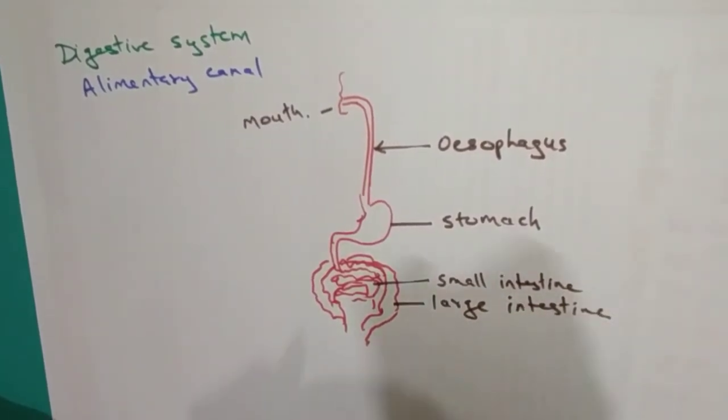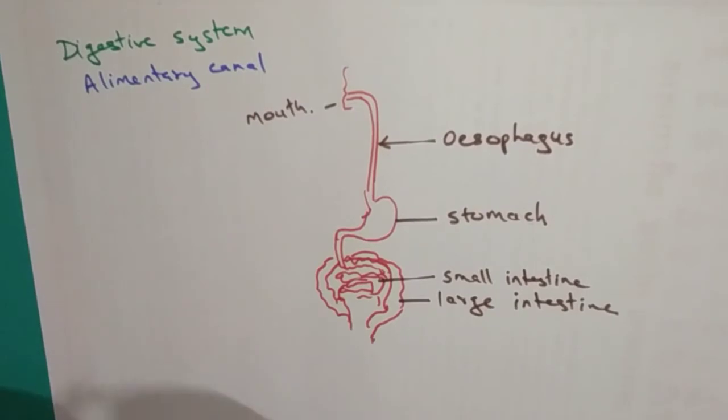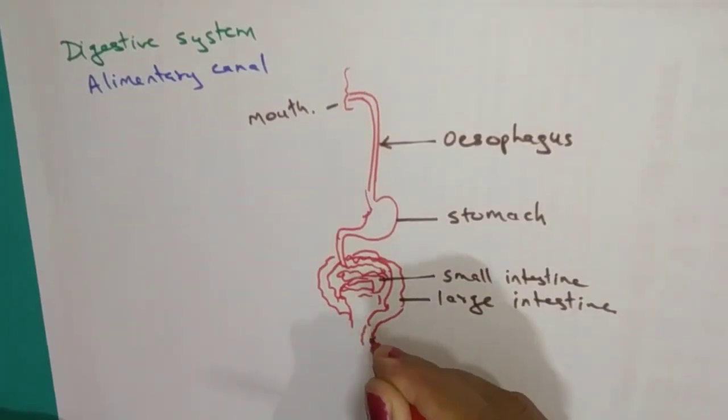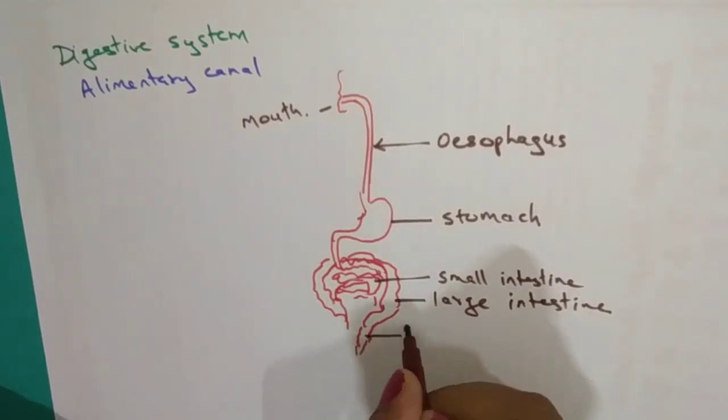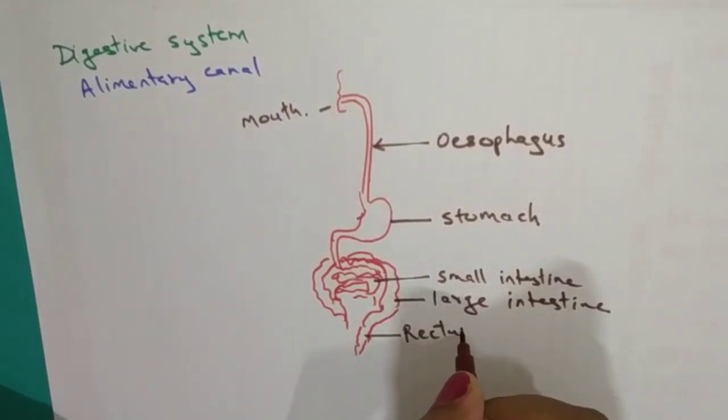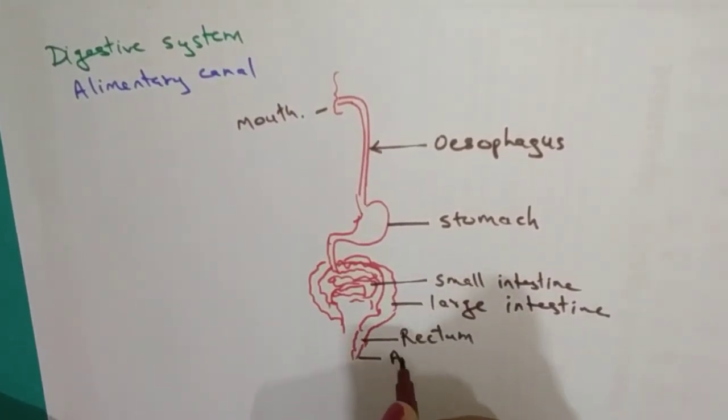After the large intestine, this part, that is just called as rectum. And after the rectum, the last part is anus.